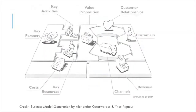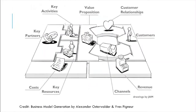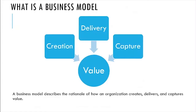The business model canvas was invented by Alexander — I cannot pronounce his complete name — but it gives you a framework to clearly identify where your business can make money and where your main focus should be. Basically, in a business model we have three aspects of value.